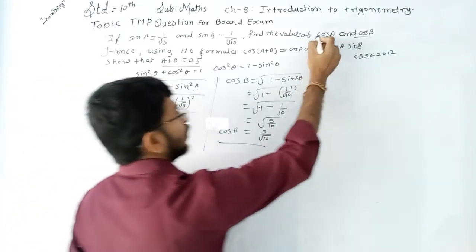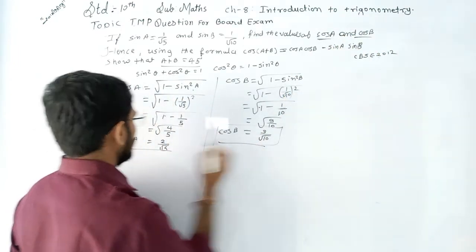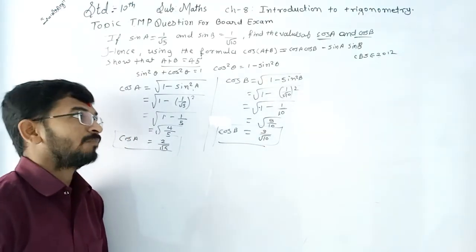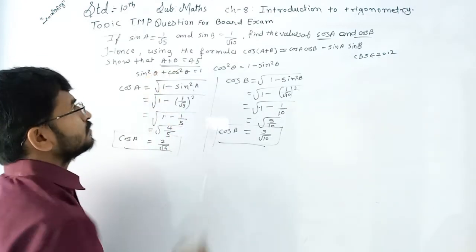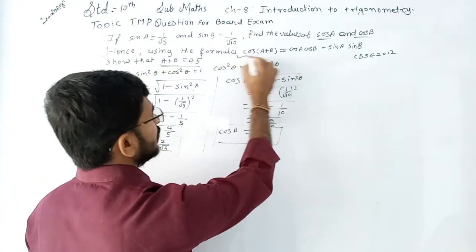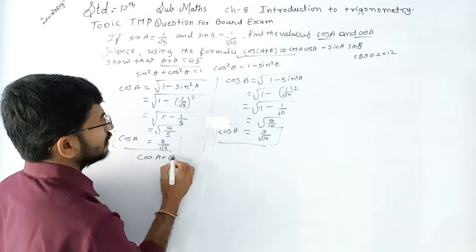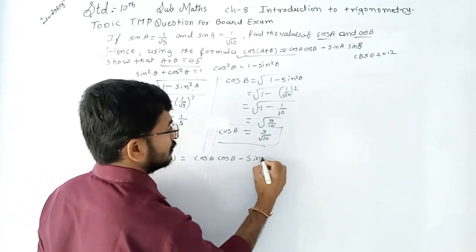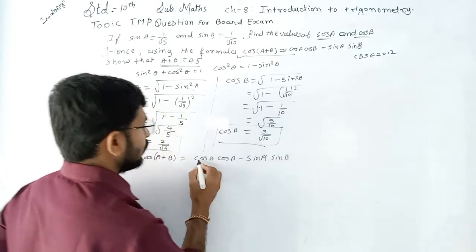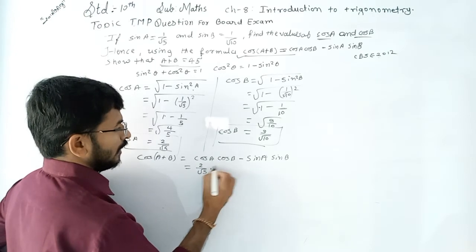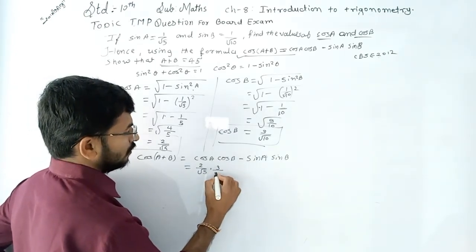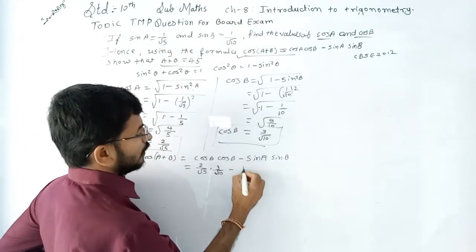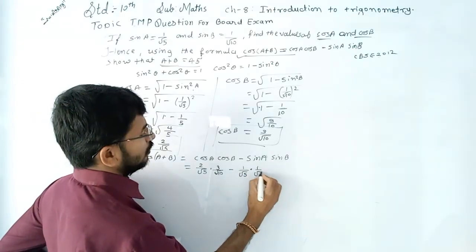The first task is completed. We have found cos A = 2/√5 and cos B = 3/√10. Now the second task is to show that A + B = 45 degrees. We will use the formula: cos(A+B) = cos A cos B − sin A sin B. The value of cos A = 2/√5, cos B = 3/√10, sin A = 1/√5, and sin B = 1/√10.